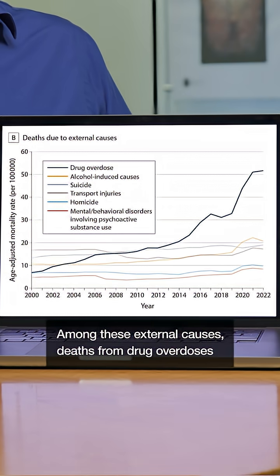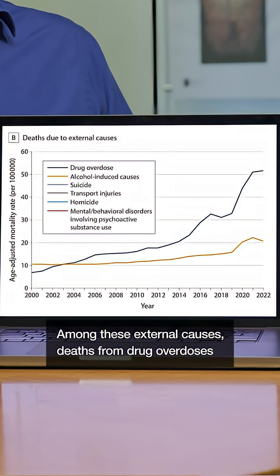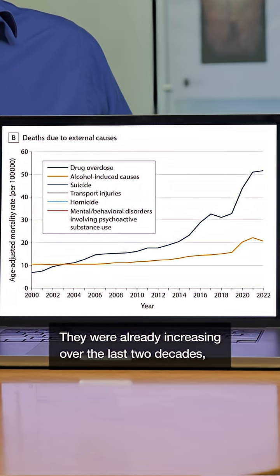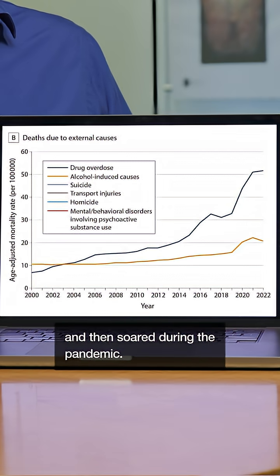Among these external causes, deaths from drug overdoses and alcohol have the highest mortality rates. They were already increasing over the last two decades and then soared during the pandemic.